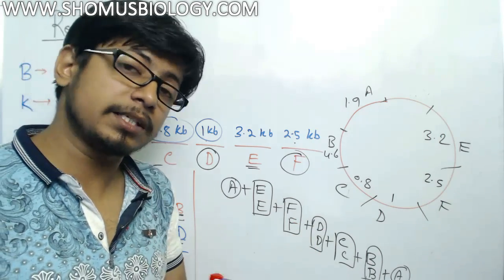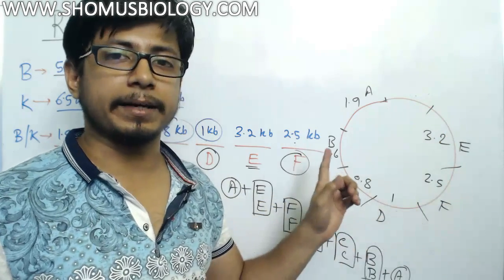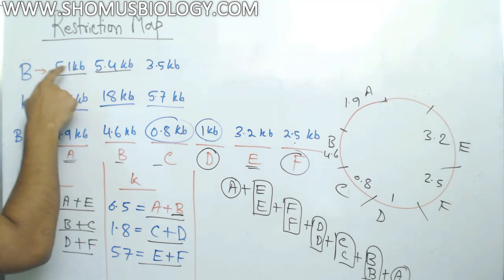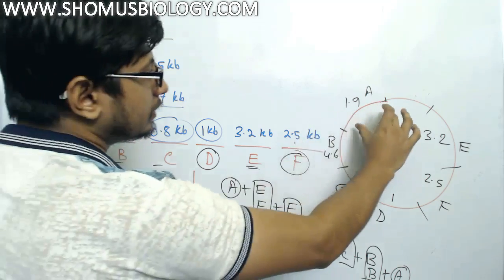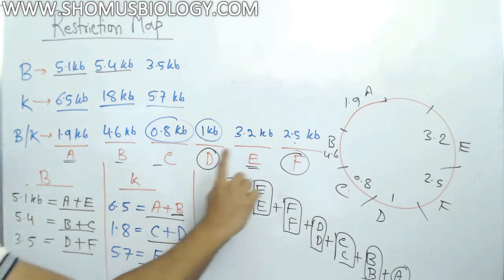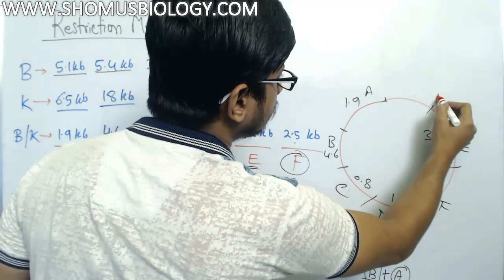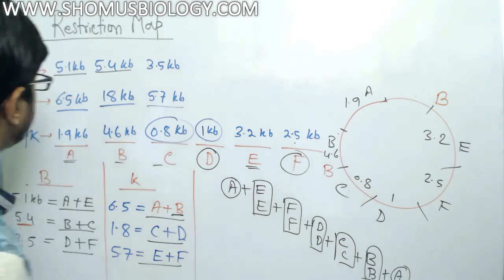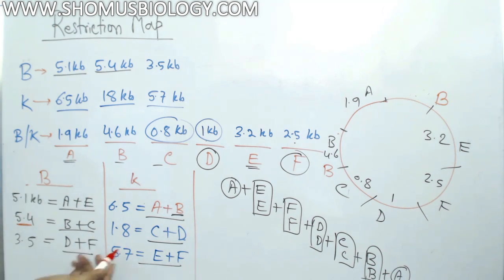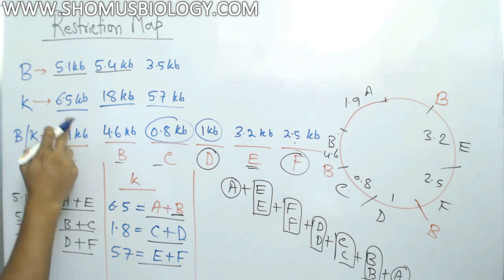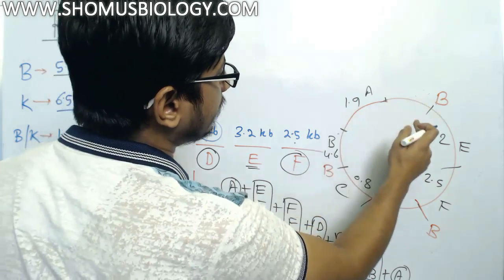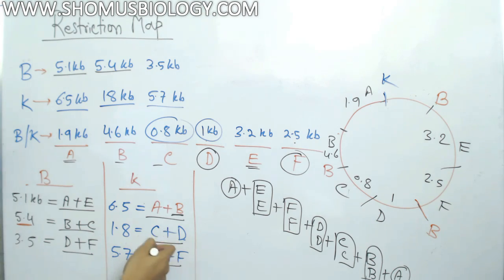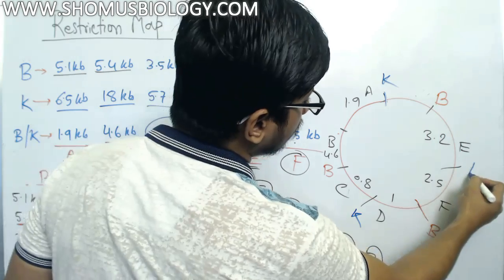The last part is placing the enzyme cut sites. For enzyme B: B cuts between A and E (giving the 5.1 kb fragment A+E), between B and C (giving 5.4 kb, B+C), and between D and F (giving 3.5 kb, D+F). For enzyme K: K cuts between A and B (giving the 6.5 kb fragment A+B), between C and D (giving 1.8 kb, C+D), and between E and F (giving 5.7 kb, E+F). You can now place not only the fragment lengths but also the exact positions where enzymes B and K cut.